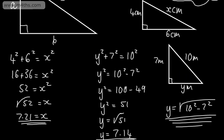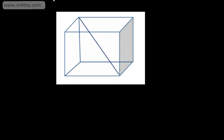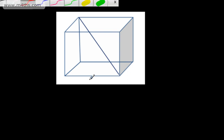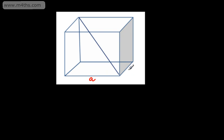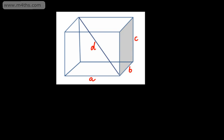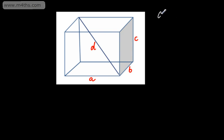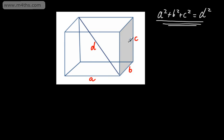Let's now look at this in 3D. What we've got here is a cuboid. I'm going to label up the sides: this length is going to be A, this one is B, and we're going to have a height of C. I'm going to call this length D - so the diagonal of the box is going to be called D. In 3D, Pythagoras' theorem says that A squared plus B squared plus C squared is equal to D squared. We're taking the sides of the cuboid, squaring each of them, adding them together, and that gives us the diagonal squared.